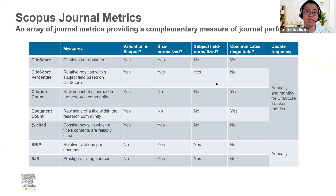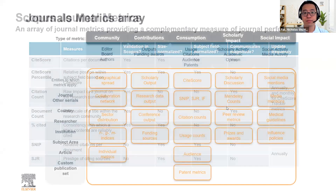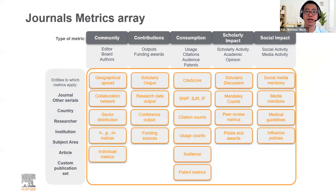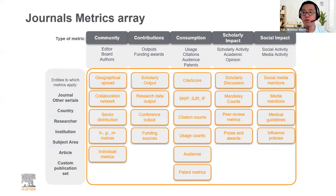We have many different metrics on Scopus: CiteScore, CiteScore percentile, citation count, document count, percent cited, SNIP, and SJR. There are many different types of journal metrics you can leverage — to engage the community, to understand contributions, consumption patterns, scholarly impact, as well as social impact. We have over 30 sets of metrics at your disposal in Scopus, but I want to touch upon three key metrics: CiteScore, SNIP, and SJR.